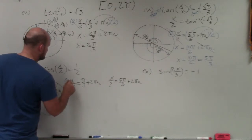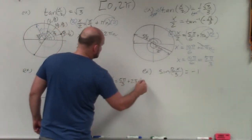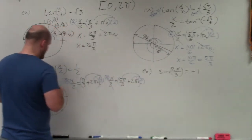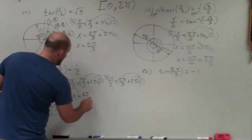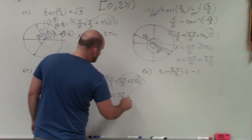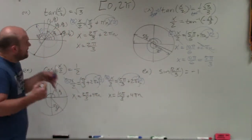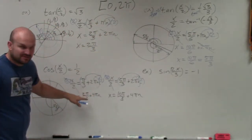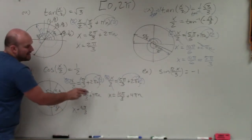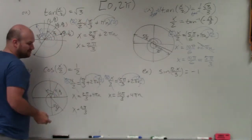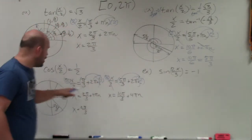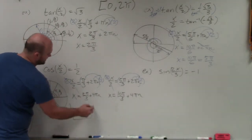Now I solve for x by multiplying by 2 on both sides, applying the distributive property. I get x = 2π/3 + 4πn, and x = 10π/3 + 4πn. Checking the constraint between 0 and 2π: 2π/3 is within range, but adding 4π is two full revolutions and exceeds 2π. For 10π/3, note that 2π = 6π/3, so 10π/3 is already outside the range. The only solution is x = 2π/3.